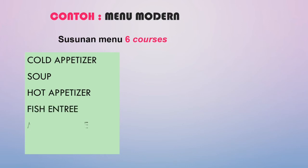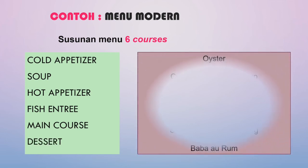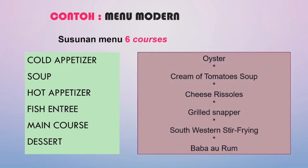Menu modern yang disederhanakan dari menu klasik 13 giliran menjadi menu modern 6 cours, yaitu: pertama cool appetizer, kedua soup, ketiga hot appetizer, keempat fish entrée, kelima main course, dan keenam dessert. Contoh menu: cool appetizer ada oyster, soup ada cream of tomato soup, hot appetizer ada cheese risol, fish entrée ada grilled snapper, main course ada southwestern stir fry, dan dessert ada baba au rhum.